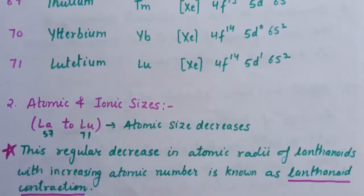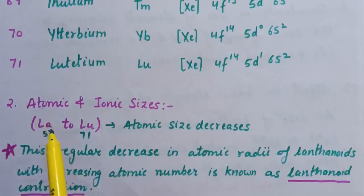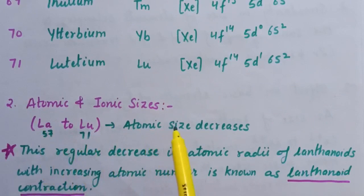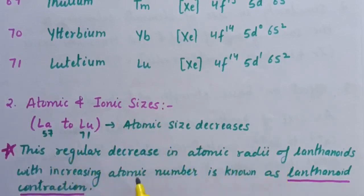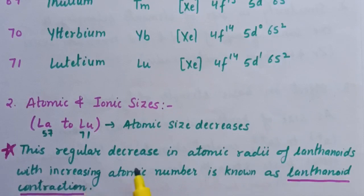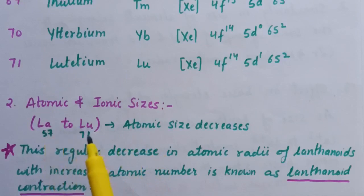In lecture number 5, we discussed the electronic configuration of lanthanoids. Now, the second topic is atomic and ionic sizes of lanthanoids. As we move from atomic number 57 to 71 in lanthanoids, atomic size decreases, and similar is the trend for ionic radii.